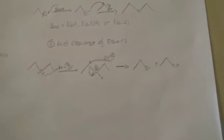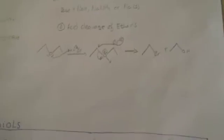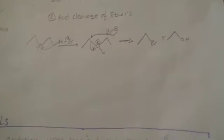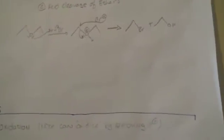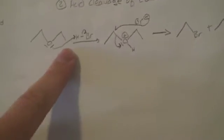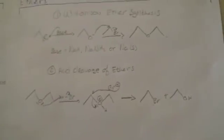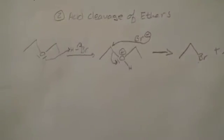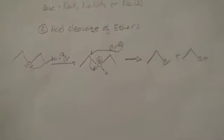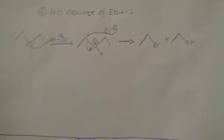If you want to get rid of your ether, back to your alkyl halide and your alcohol, you add in an acid. HBr is popular if you want the halide version. You protonate the ether right here so that your leaving group is an alcohol, and then the bromine attacks the carbon next to the positive leaving group, which has a partial positive on it, giving you that.